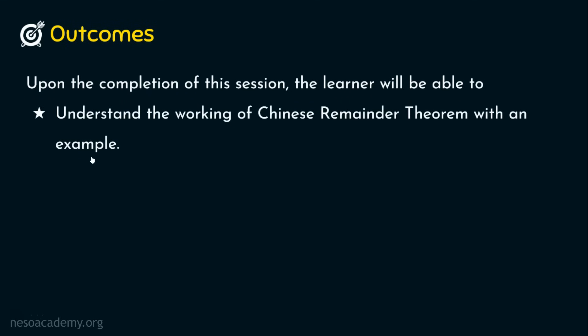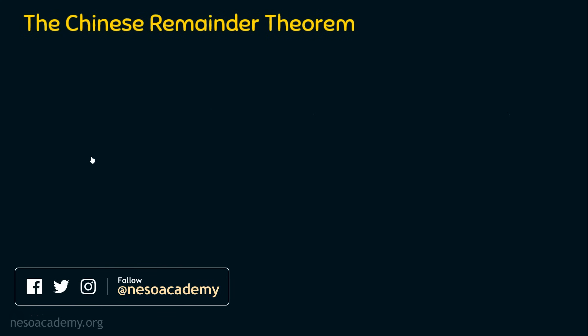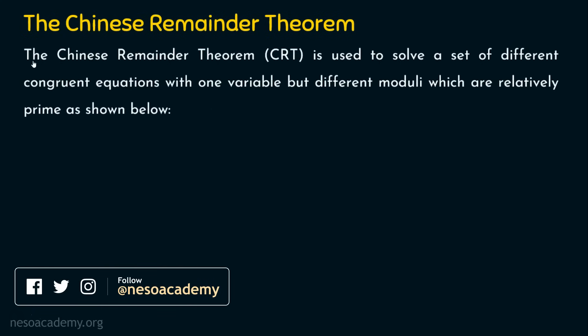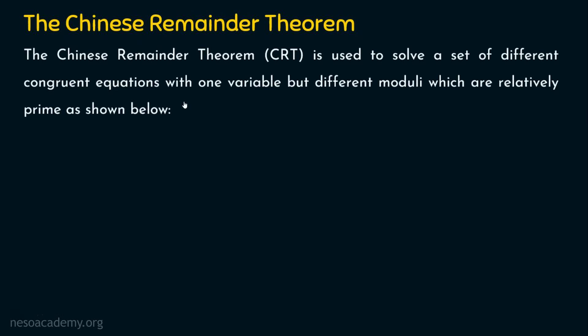Let's directly dive into the topic of the day, the Chinese remainder theorem. The Chinese remainder theorem, simply CRT, is used to solve a set of different congruent equations with one variable but different moduli which are relatively prime. We are going to find the value of this one variable using the Chinese remainder theorem. When we see some examples, you will understand this.